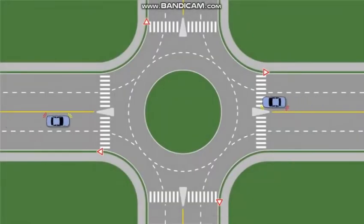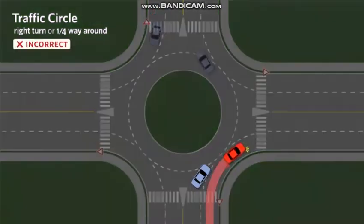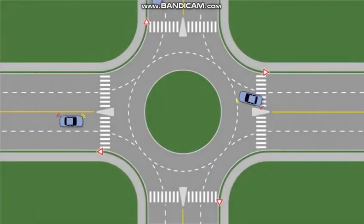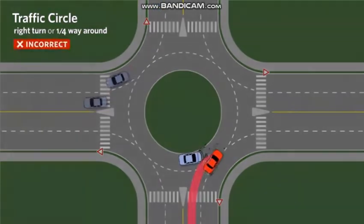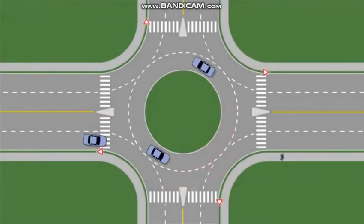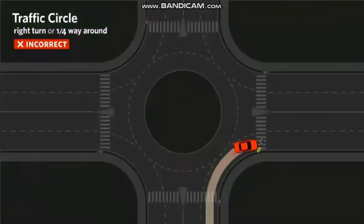In a traffic circle, some common mistakes when turning one quarter of the way around are: entering into the circle and not yielding to traffic in the circle, making a right turn from the left or inside lane, and exiting the circle and not yielding to pedestrians at crosswalks.